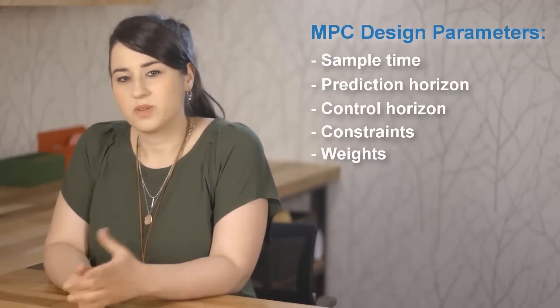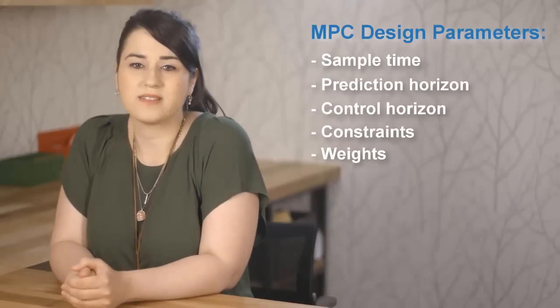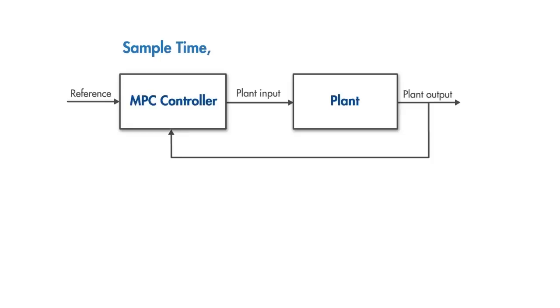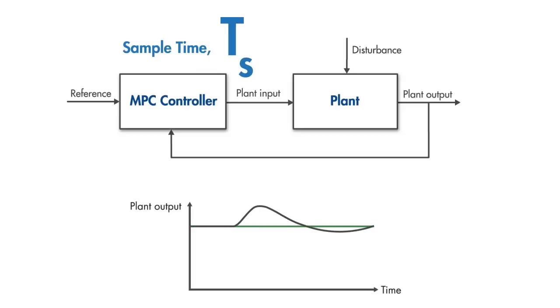Here we'll give you some recommendations on how to choose the controller sample time, prediction and control horizons, constraints, and weights. By choosing the sample time, we determine the rate at which the controller executes the control algorithm. If it's too big, when a disturbance comes in, the controller won't be able to react to the disturbance fast enough.